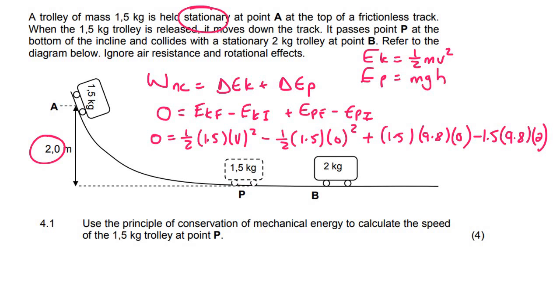And so now we can go ahead and simplify. So I'm going to say zero is equal to 0.75V squared because that's a half of 1.5 minus zero plus zero minus 29.4.